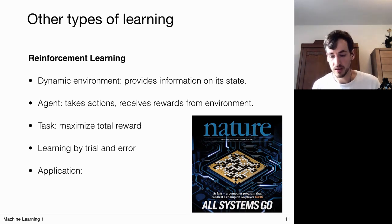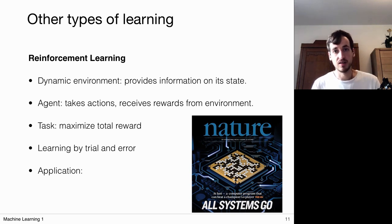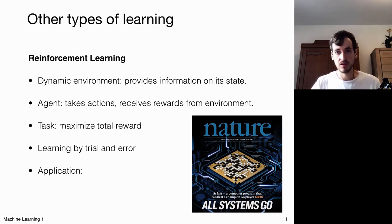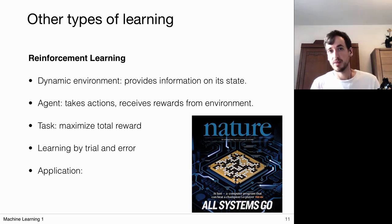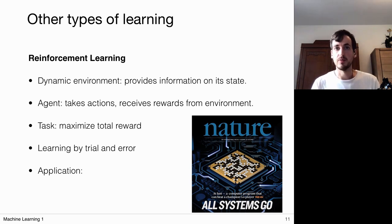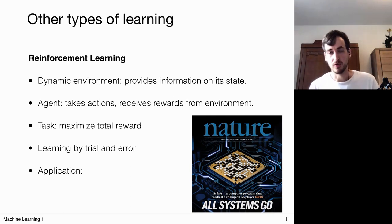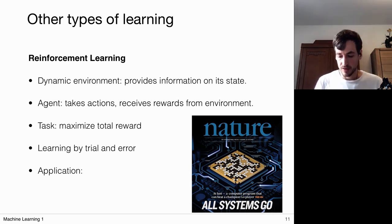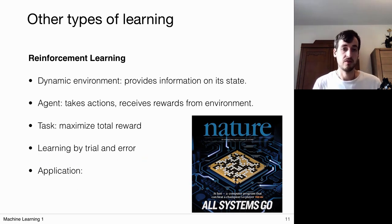In reinforcement learning systems we always deal with a state of the environment — all the white and black marbles on the board represent the current state. The computer as an agent can take actions: it puts another piece on the board, changing the state. This also leads to a reward or penalty — by making an action you either gain some ground on the board or lose it. This is experience: if it was a good move, remember it and try it again; if it was a bad move, remember not to do it again. Such learning methods are based on the concept of trial and error.